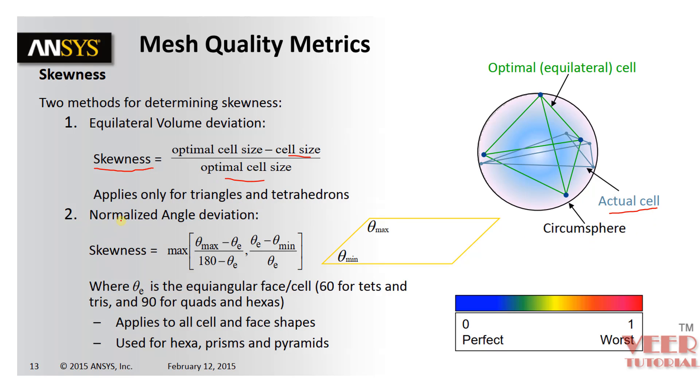So here we can see this quadrilateral is like a perfect element. This is actual cell. Similarly, we can also calculate the normalized angle deviation using this formula by theta max by theta e.